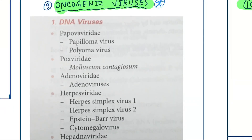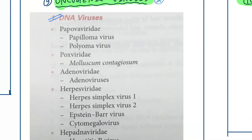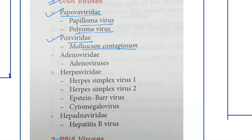Oncogenic viruses are divided into DNA viruses and RNA viruses. DNA viruses: first is the Papovaviridae family — papillomavirus and polyomavirus. Next Poxviridae family — molluscum contagiosum. Next Adenoviridae family — adenoviruses.